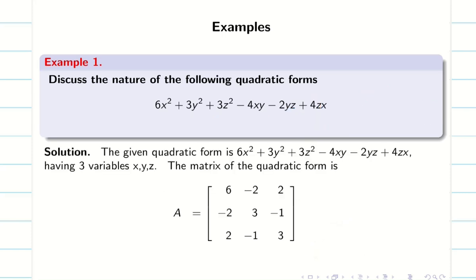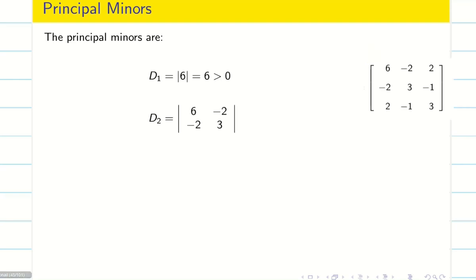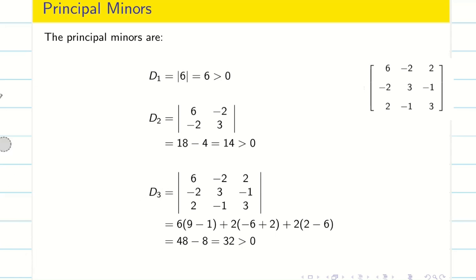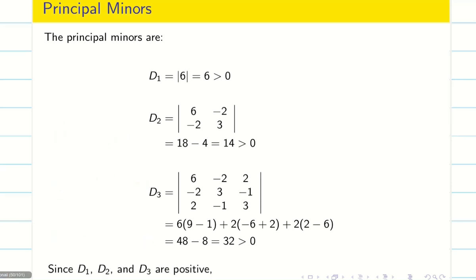Finding the principal minors: D1 is 6, which is greater than 0. D2 is the determinant of the first 2×2 submatrix, which expands to 14 — greater than 0. D3 is the determinant of the full 3×3 matrix, which expands to 32 — also greater than 0. Since D1, D2, and D3 are all positive, the quadratic form is positive definite.